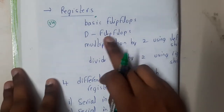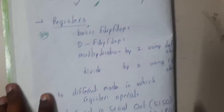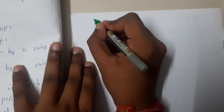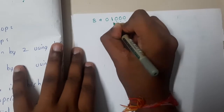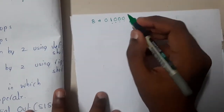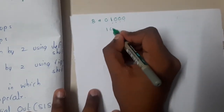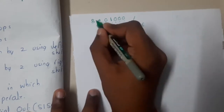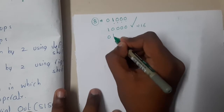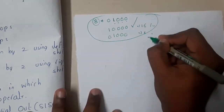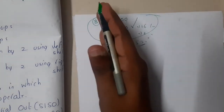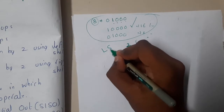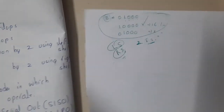We use D flip-flops in registers. A major advantage is easy multiplication and division by two. For example, the number 8 in binary is 1000. If you want to multiply it by two, shift one bit to the left — you get 10000, which is 16. To divide by two, shift one bit to the right — you get 0100, which is 4. This concept is called left shifting and right shifting.